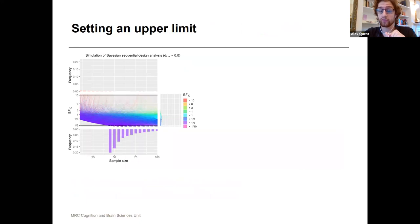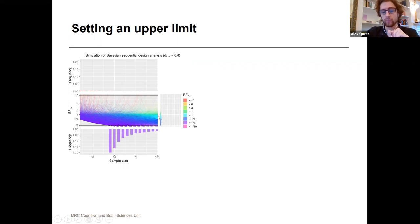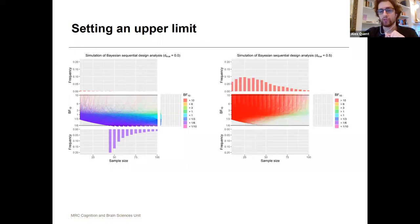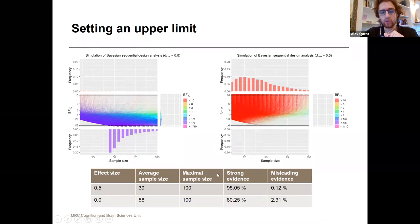You can run the same simulation again and see how this affects the evidence that you are likely to produce. With the null effect, the distribution now looks like this. We cut off the simulation here and then stop with whatever Bayes factor we ended up with. You can do the same thing for a medium effect size, which looks like this.